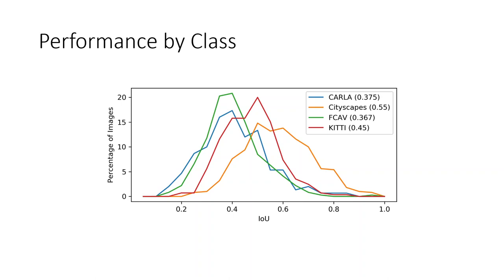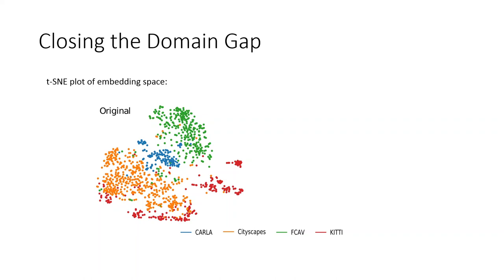This histogram shows how well images from different input sources are reconstructed. The most notable observation is the Gaussian shape of the IOU distributions for each class. Furthermore, real pictures such as from Cityscapes or KITTI tend to perform better than synthetic renderings such as from CARLA or FCAV. We suggest this is due to the fact that the semantic segmentation network, the edge detection network, and the style transfer network were all trained on real photographs and videos.